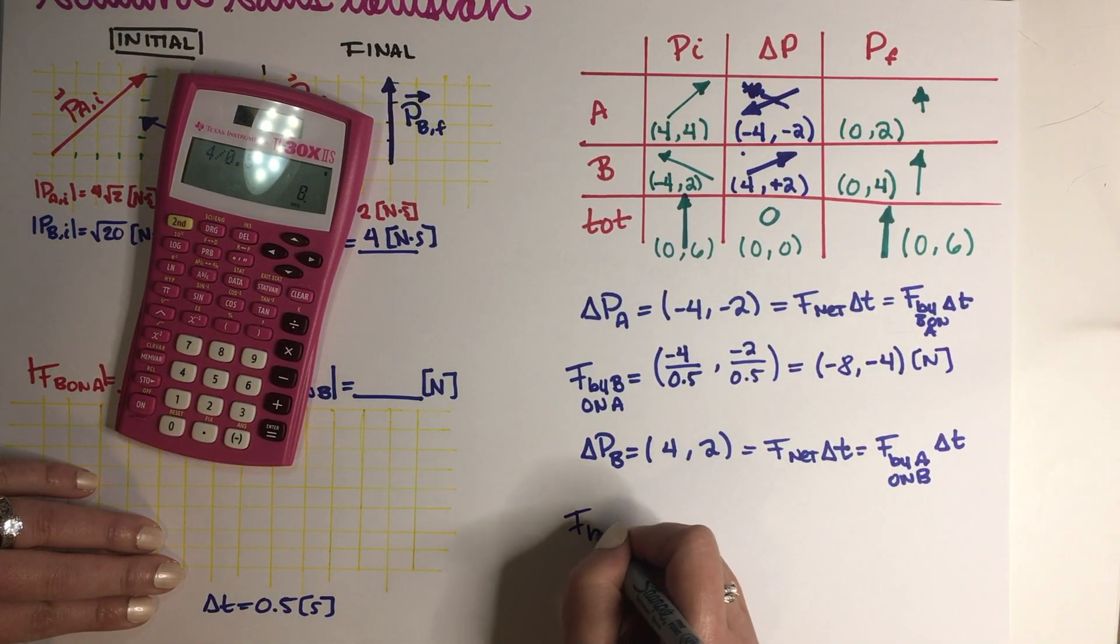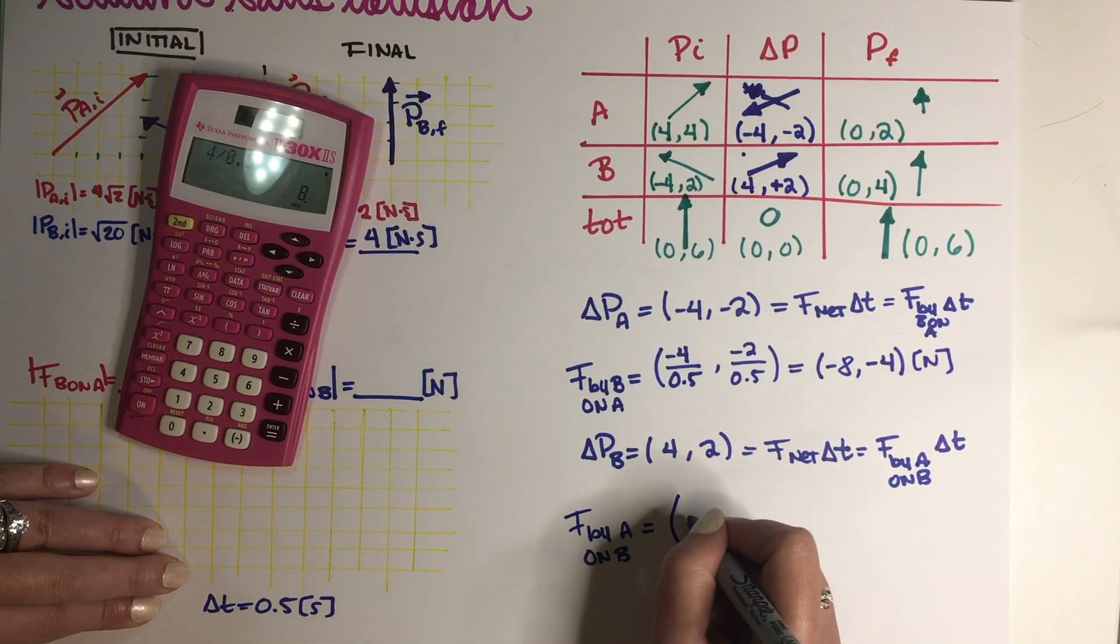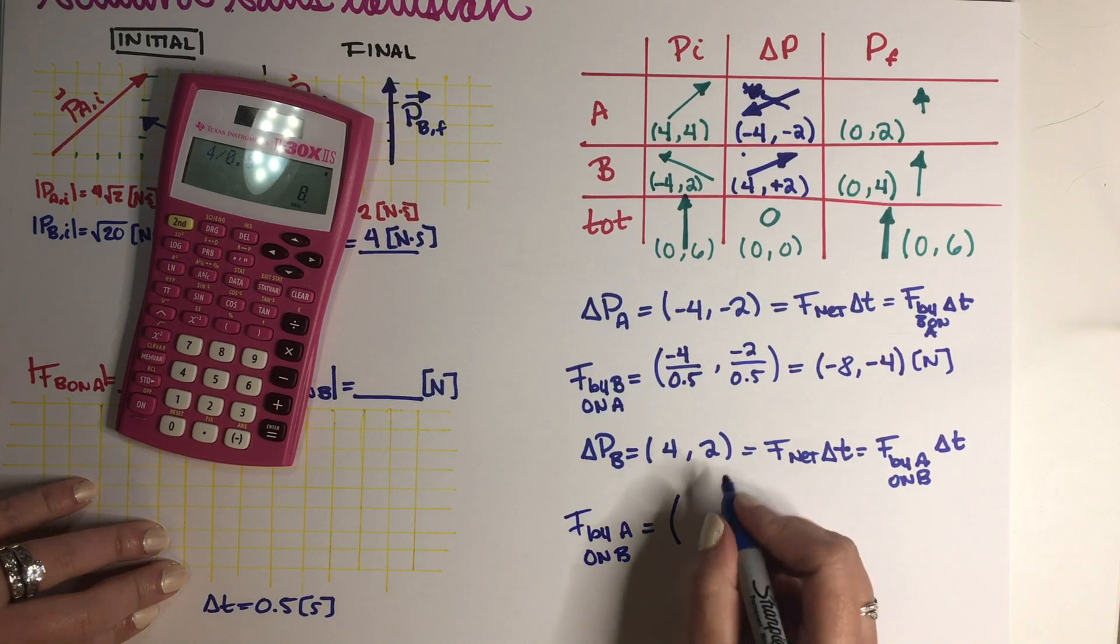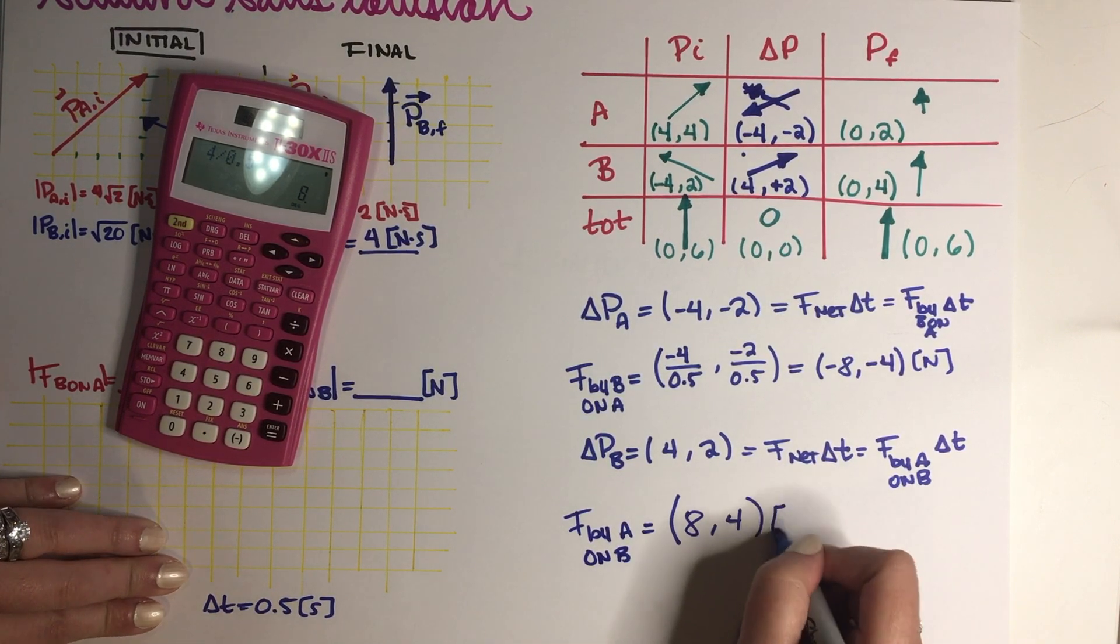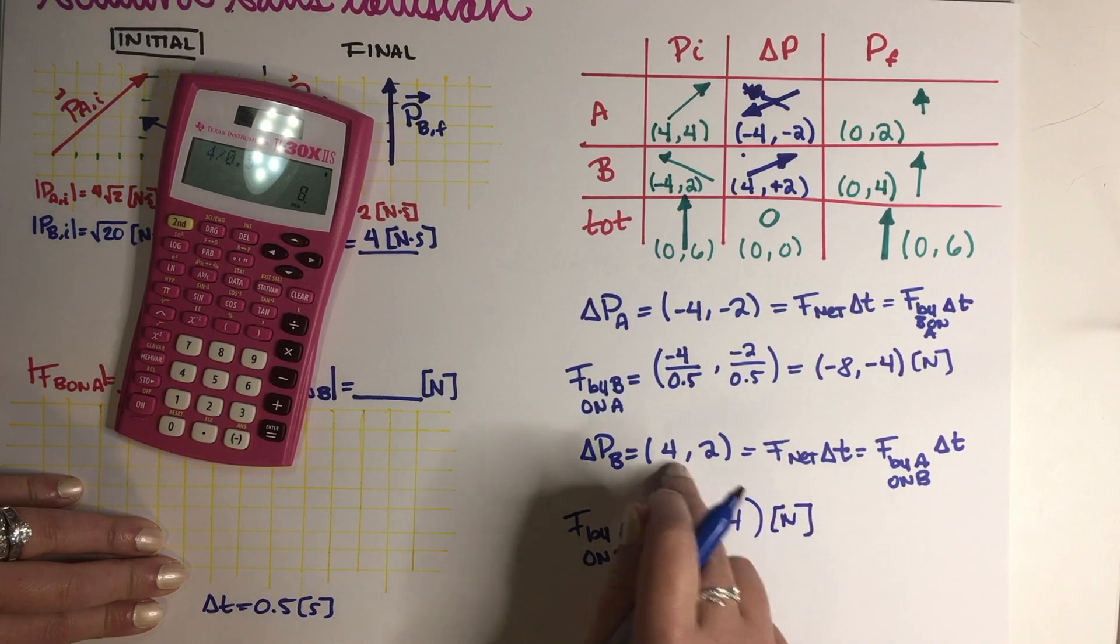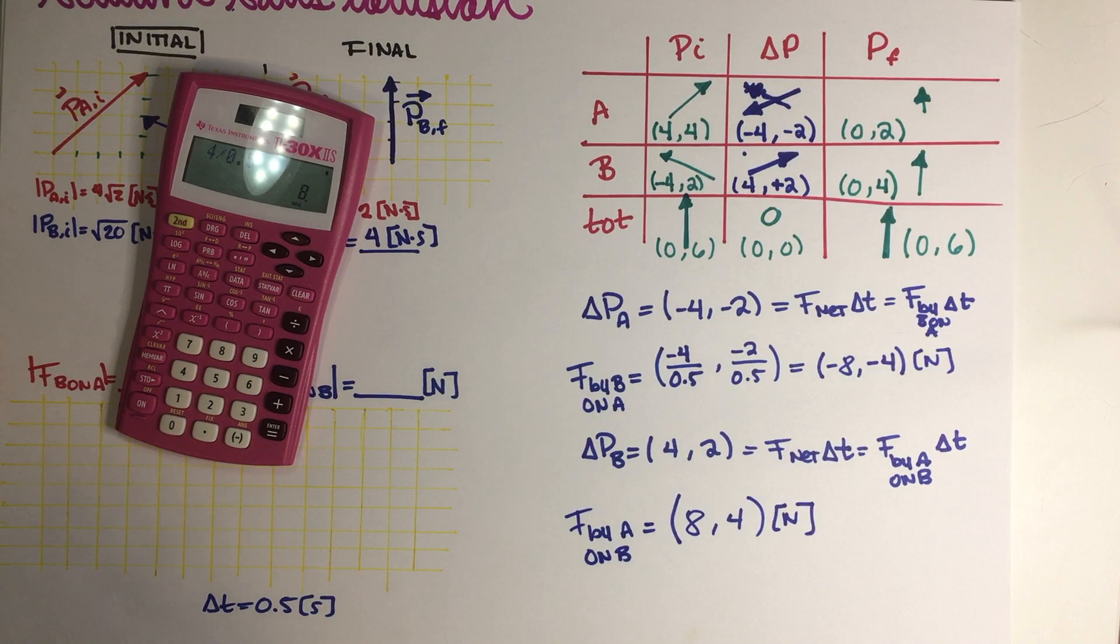And this would be (-8, -4) newtons. And force by A on B, that would be, well, it has to be equal and opposite because of Newton's law. So this is just (8, 4) newtons. You can also do the exact same procedure and you will find that this is exactly the same. Okay, so the first thing that I have to do is write the magnitudes.